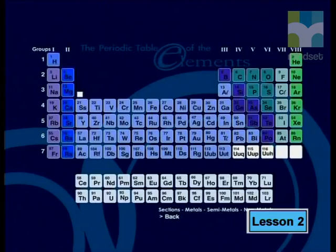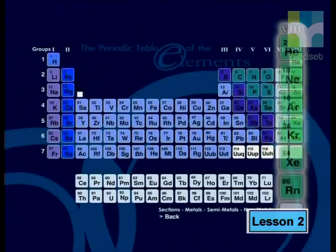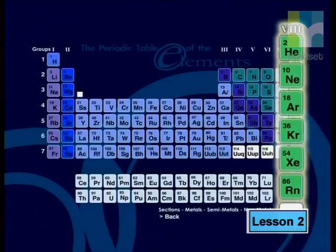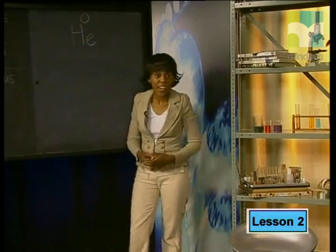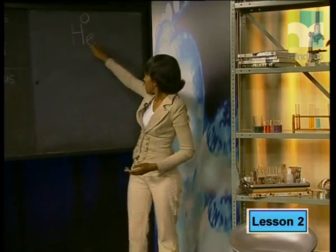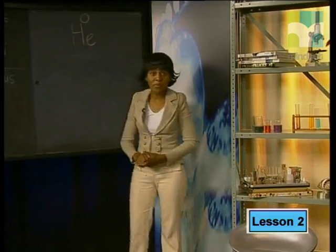Let's have a look at a few examples of elements in their ground state. The noble gases are found in group eight of the periodic table. They are all inert and do not gain or lose electrons or react to form compounds. Helium is one of the noble gases and is given an oxidation number of zero. We write the oxidation number of helium above the symbol. Notice that this value is the same as the valency of the helium atom.